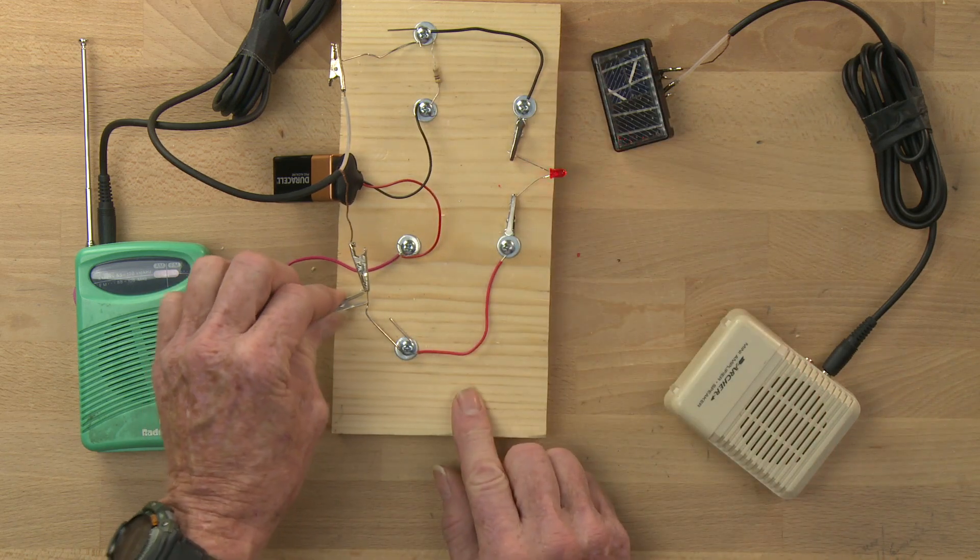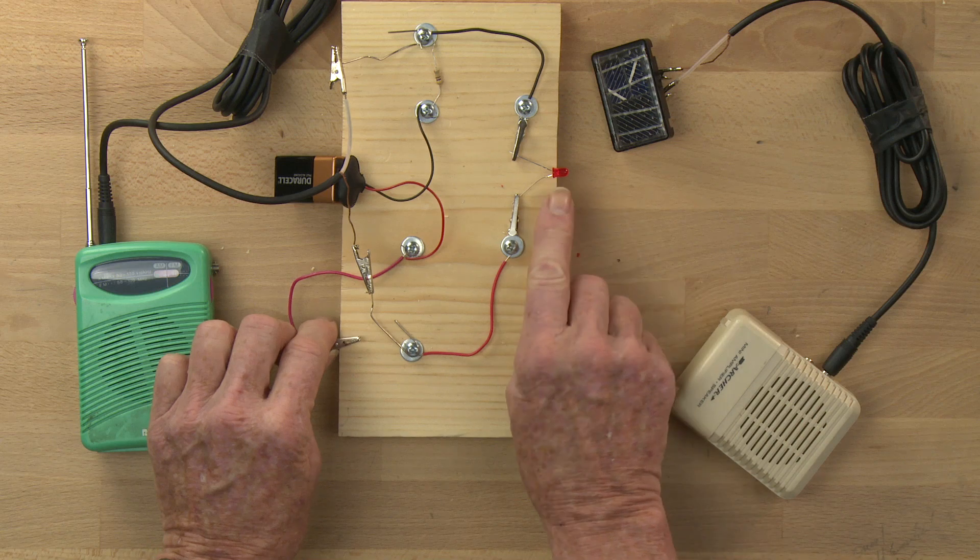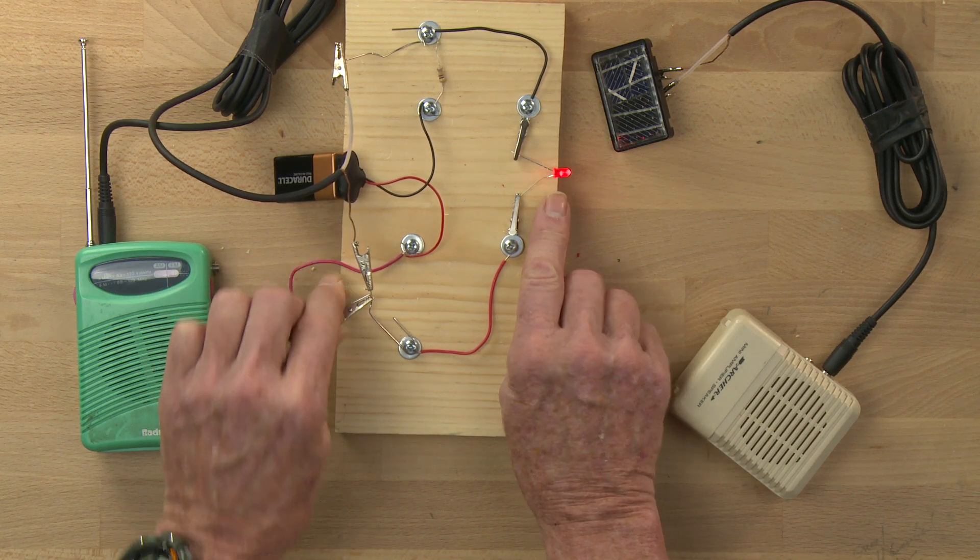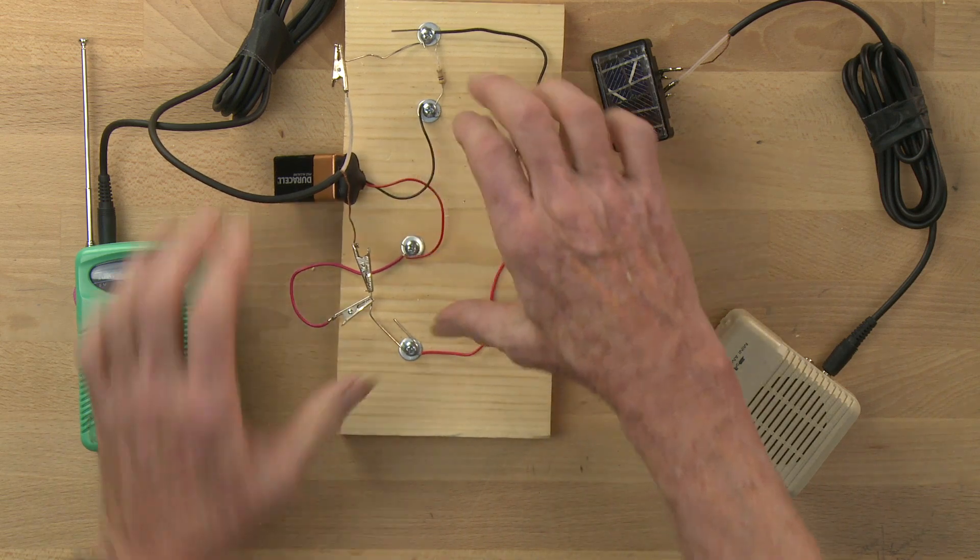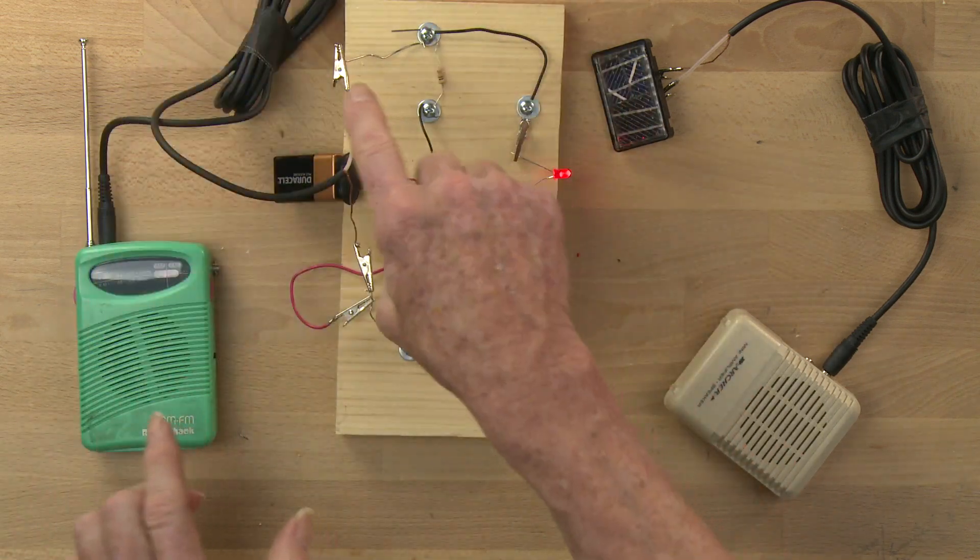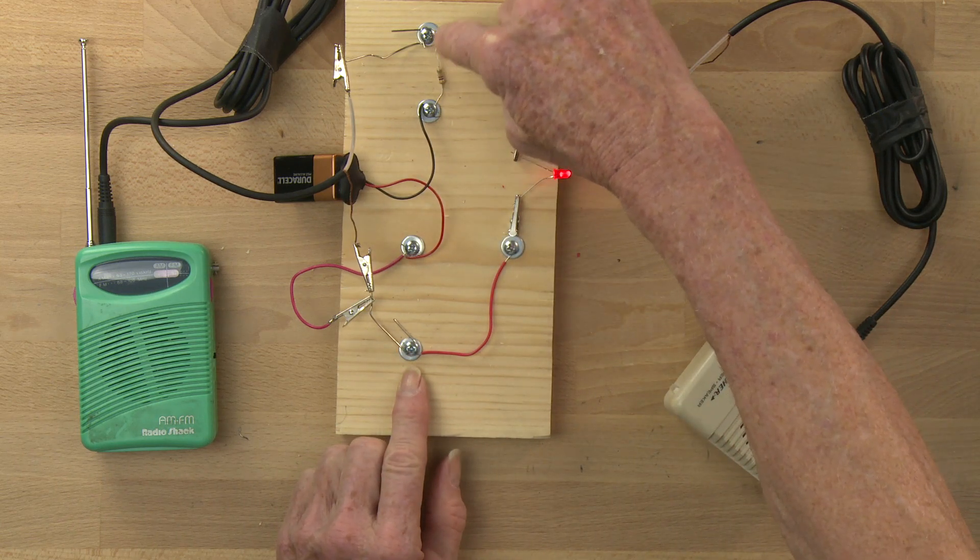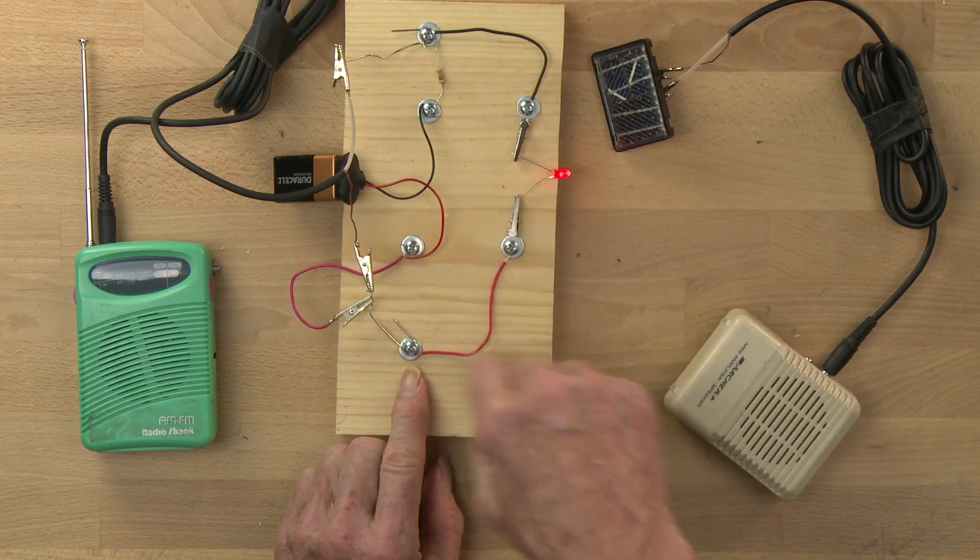The thing is, the signal from the radio is not enough voltage or current to light the LED. So I add into this circuit a 9-volt battery in parallel with the audio signal. That 9-volt battery sends DC electric current through the resistor and through the LED and makes it light.